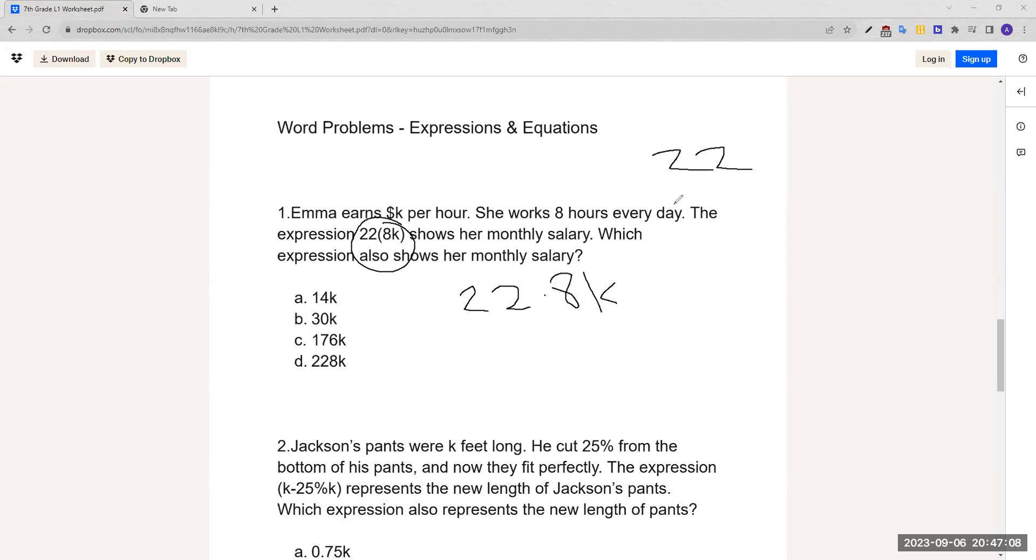This expression can be simplified further by just doing 22 times 8k. We have to do some multiplication and multiply these two. 8 times 2 is 16. 8 times 2 is 16 again, plus the 1, which is 176. You can't forget about the k here. That's our answer, so it would be c.